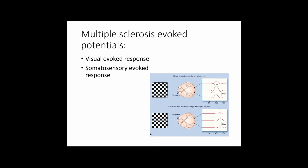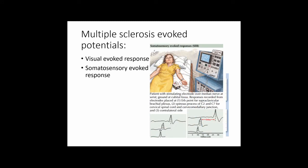Evoked potentials are also used in MS diagnosis. Visual evoked potentials and somatosensory evoked potentials exploit the fact that demyelination slows nerve conduction. In a person without MS, the occipital cortex responds to a visual stimulus after a standard latency; in MS or optic neuritis, this response is prolonged. Similarly, with somatosensory evoked potentials, stimulating the wrist should produce a response traveling up the spinal cord at a normal speed, but in MS this conduction is prolonged due to demyelination.